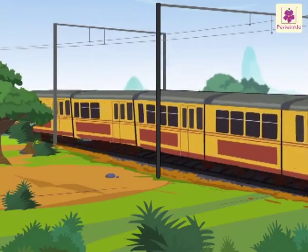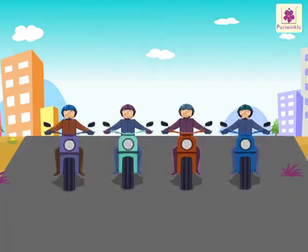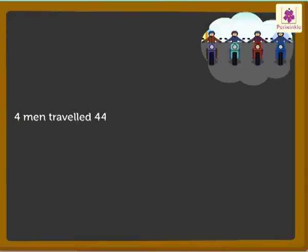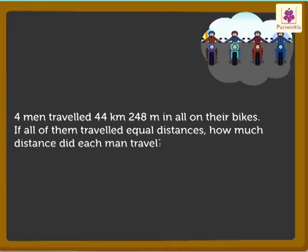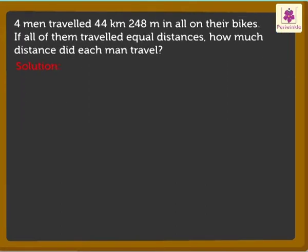Wow, it runs so fast! Look at these 4 men. They have traveled 44 kilometers 248 meters in all on their bikes. If all of them traveled equal distances, how much distance did each man travel? To get the answer, we have to divide 44 kilometers 248 meters by 4. Here again, we will first divide the kilometers and then the meters, like this.